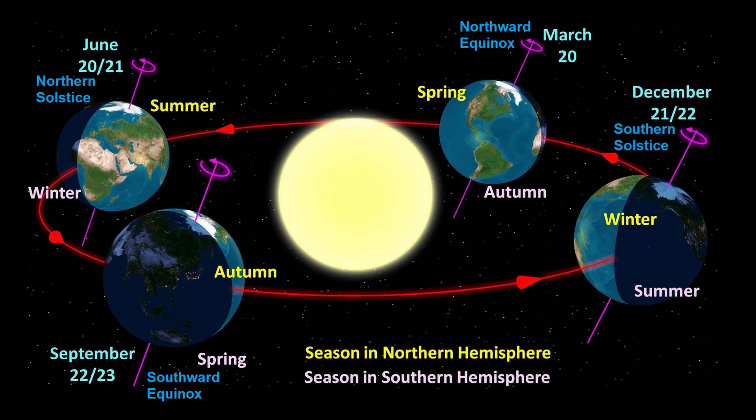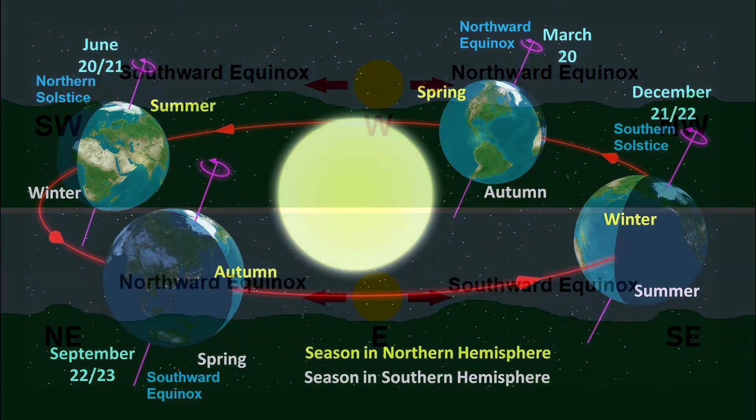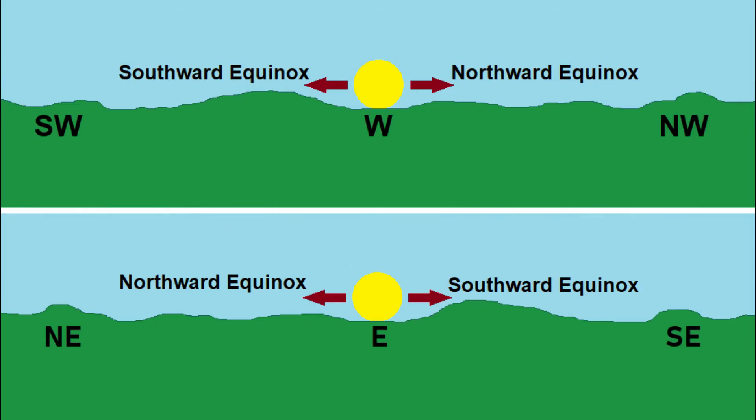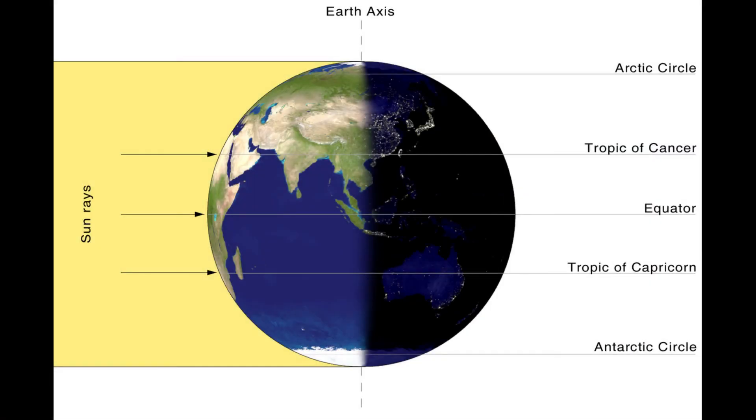The vernal equinox occurs around March 21st, and the autumnal equinox around September 21st. They are often referred to as the spring and fall or autumn equinoxes, but since the seasons are opposite in the northern and southern hemispheres, they can also be distinguished universally as the northward equinox and the southward equinox, as the apparent position of the sun is moving in one direction or the other, as it passes due east and west, and the amount of daylight becomes more or less equal briefly before beginning to increase or decrease again.